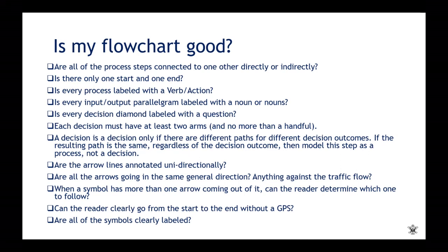Is every process labeled with a verb or action? Is every input-output parallelogram labeled with a noun or nouns? Is every decision diamond labeled with a question? Each decision must have at least two arms and no more than a handful. A decision is a decision only if there are different paths for different decision outcomes. If the resulting path is the same, regardless of the decision outcome, then model this step as a process, not a decision.